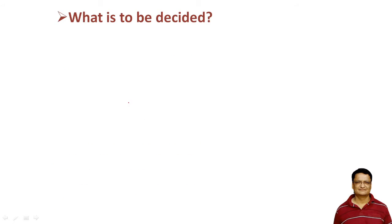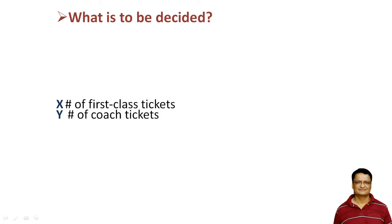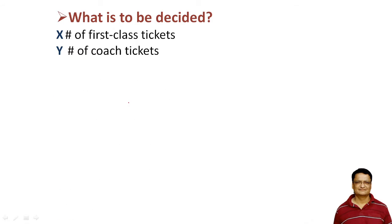Pause the video and think about this. Now let us see what is to be decided. If you read the problem carefully, we find that we need to decide the number of first class tickets and the number of coach tickets to be sold in order to make the maximum profit.